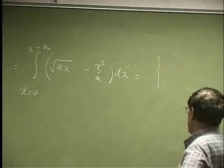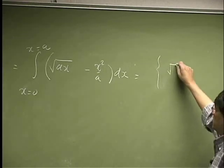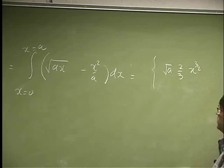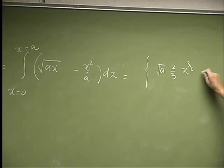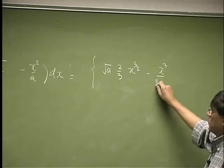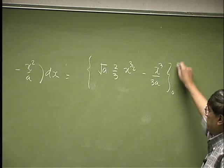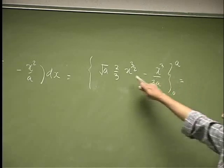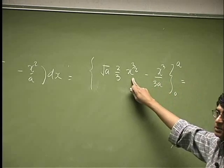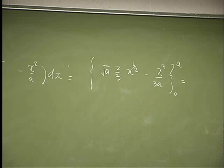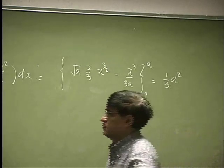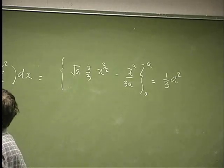So the rest of it is just basically integrations. The first one is going to give you square root a. Then you have two-thirds x three over 2. Then you're going to have x cubed over 3a. And it's between limits 0 and a. So we make substitution here. That's x three over 2. Then you have another half. And then you have two-thirds and then one-third. So basically you get one-third a squared. And that should be what we call as the area.